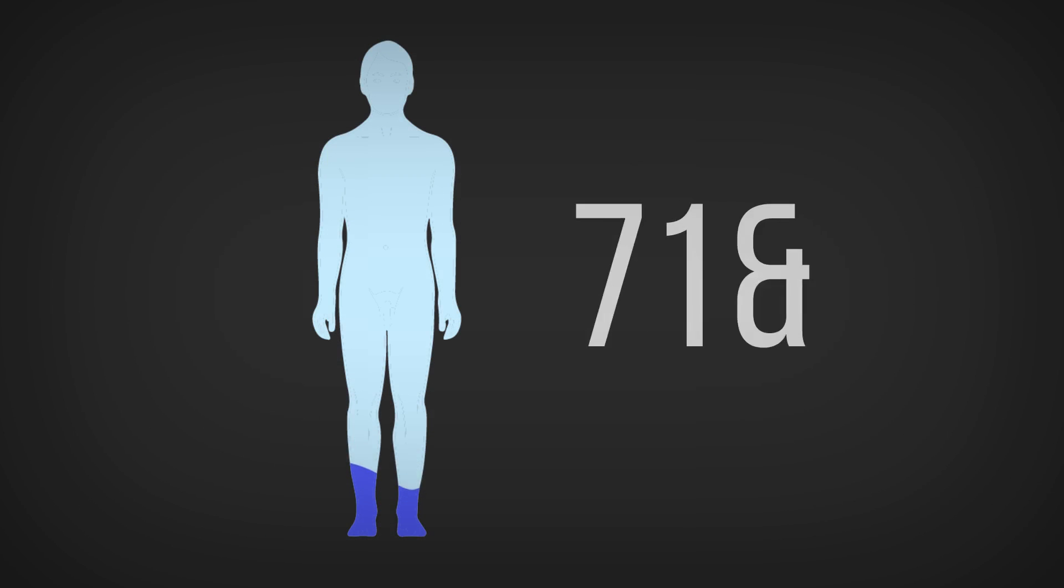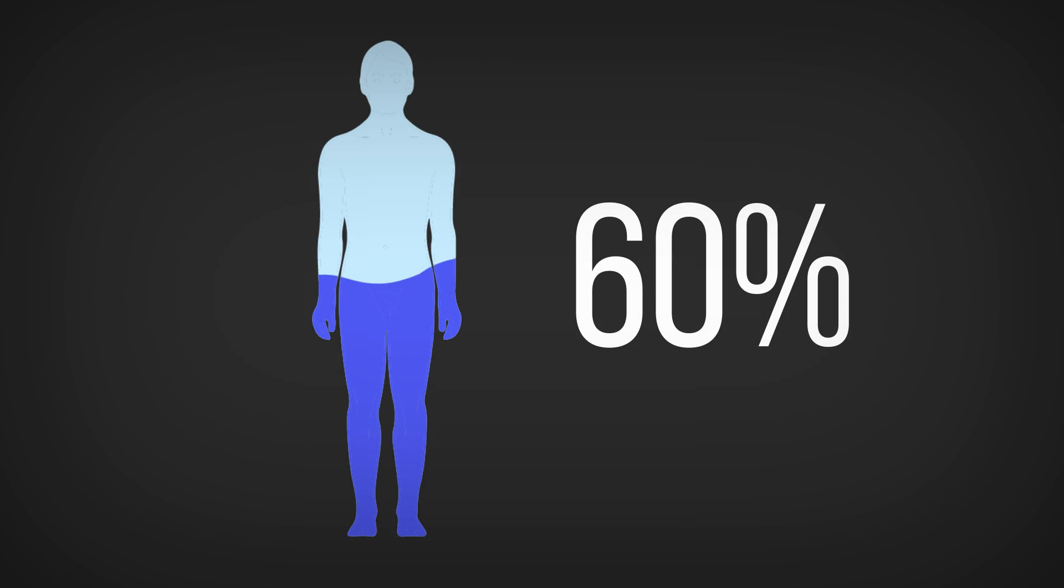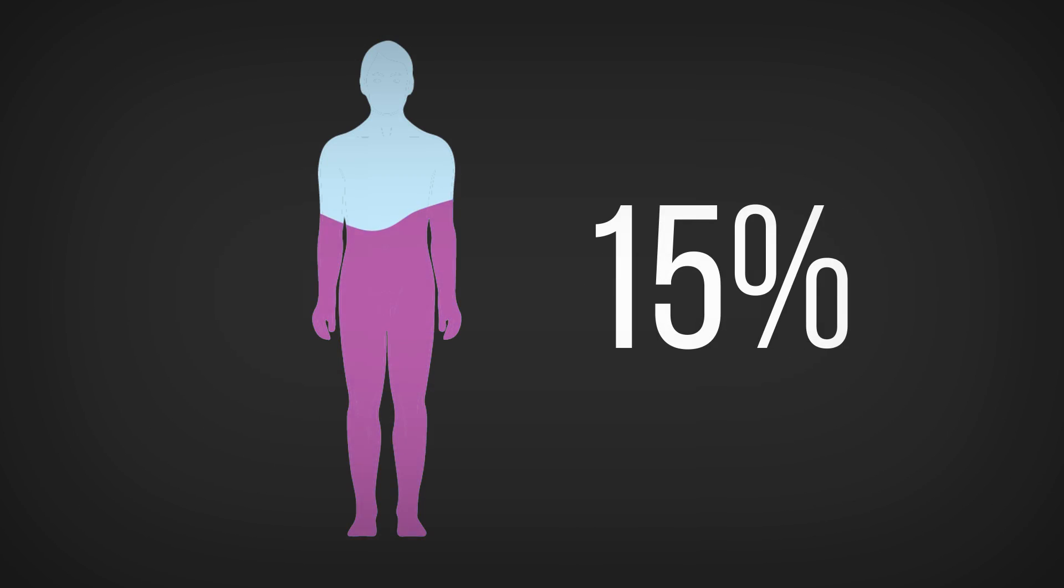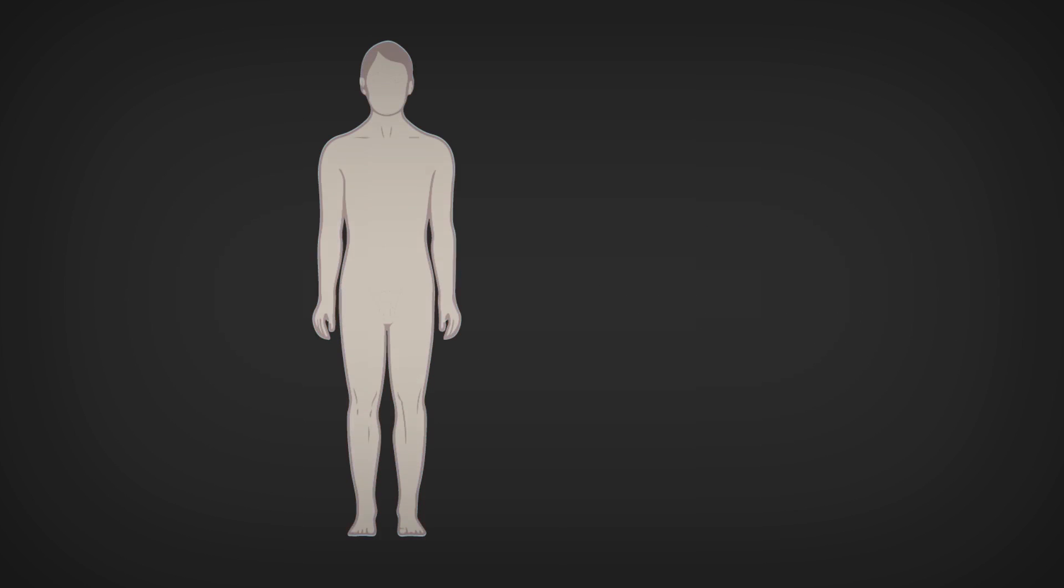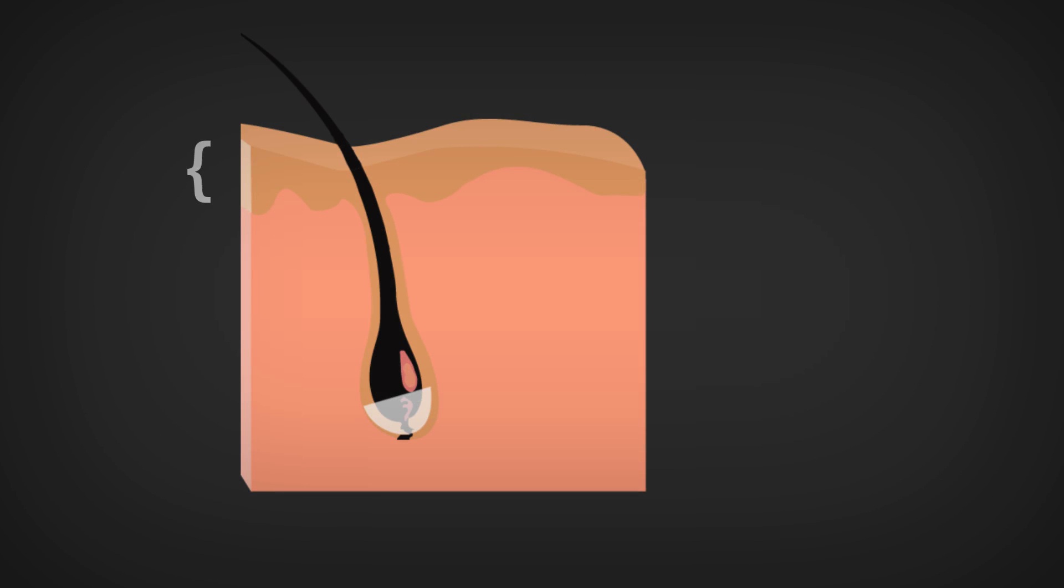Water makes up 60% of our body weight. Fluid losses greater than 15% are usually fatal. Let me ask you a question: which organ prevents the sun from absorbing all of our body water? Yes, it is the skin epidermis.